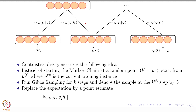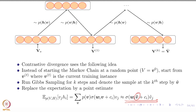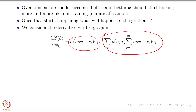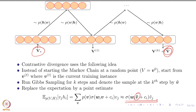Contrastive divergence does something further: instead of approximating the expectation by a summation over R samples as in Gibbs sampling, we now approximate it by a single point estimate — just the single sample drawn after K time steps. So this entire summation over all possible values of V is replaced by a point estimate from that single sample drawn after K steps.